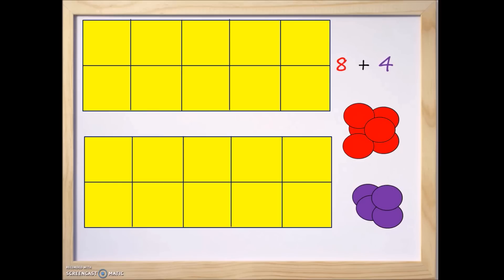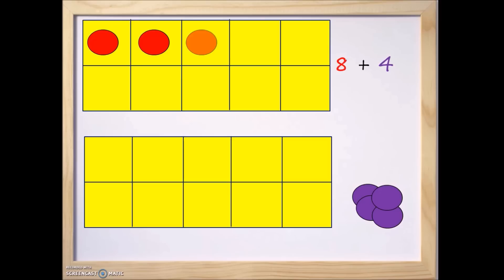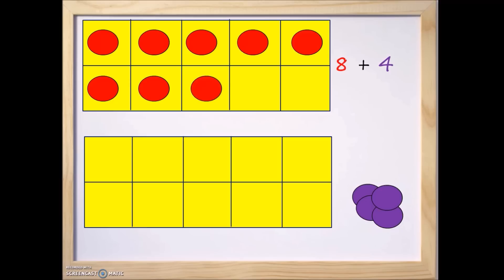So let's get started by putting the counters into the 10 frame. We're going to start with the number 8, so we're going to move these into the top 10 frame: 1, 2, 3, 4, 5, 6, 7, and 8. So here are our 8 counters to represent the number 8.